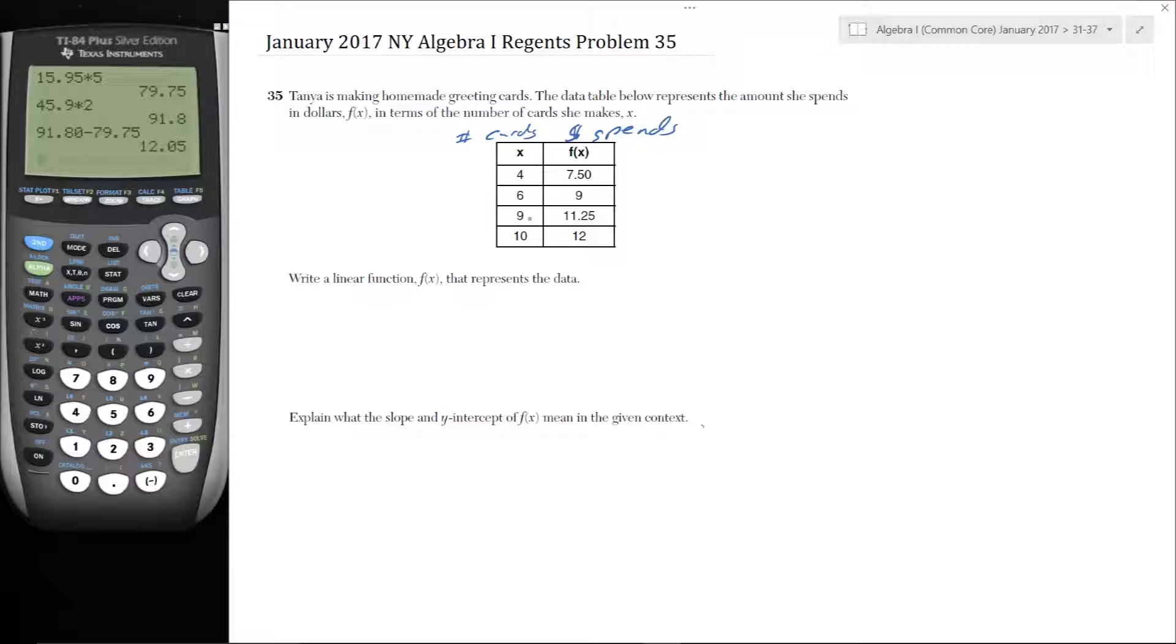Write a linear function F that represents the data. I do look at the data real quick: 4, 6, 9, 10, 7.59, 11.25, 12. And they did say linear. Explain what the slope and Y-intercept of F of X mean in the given context. Okay, so let's do that.